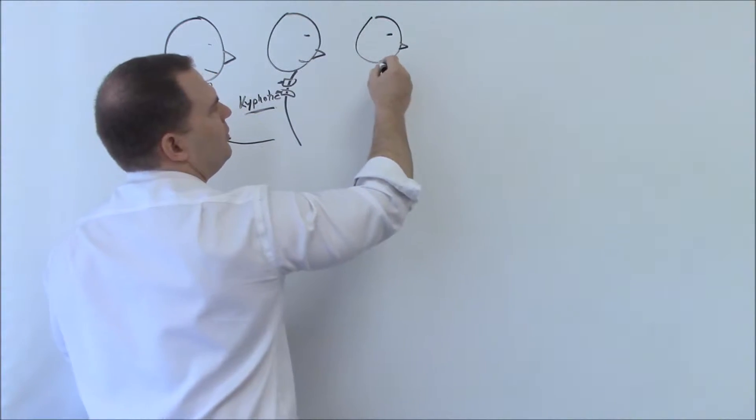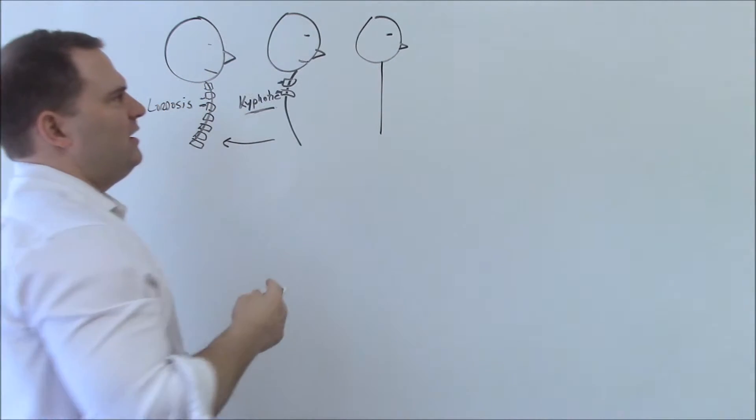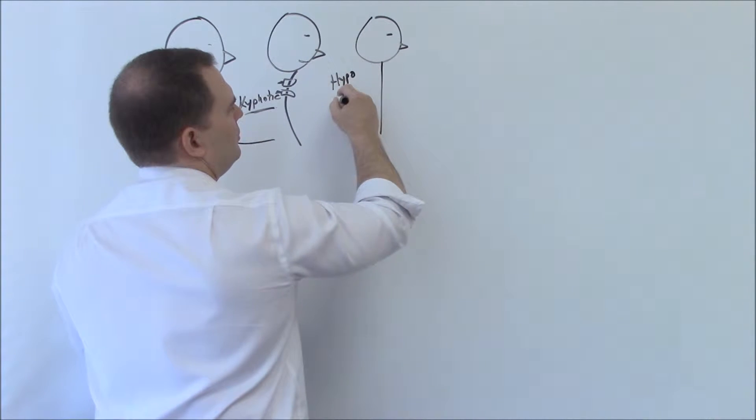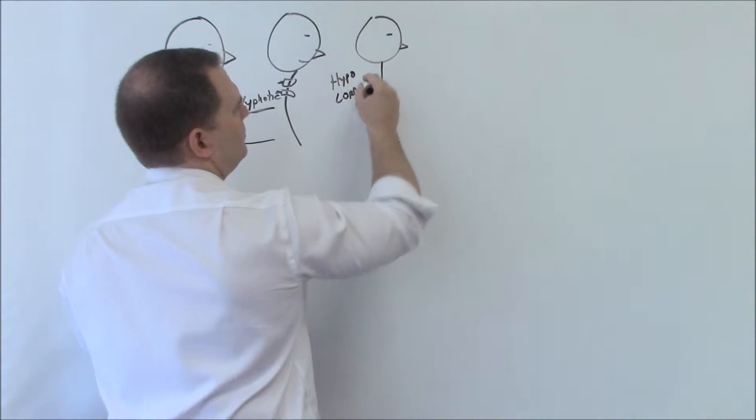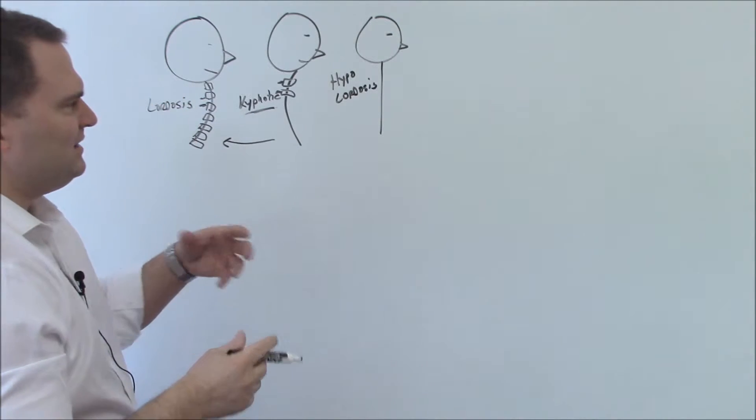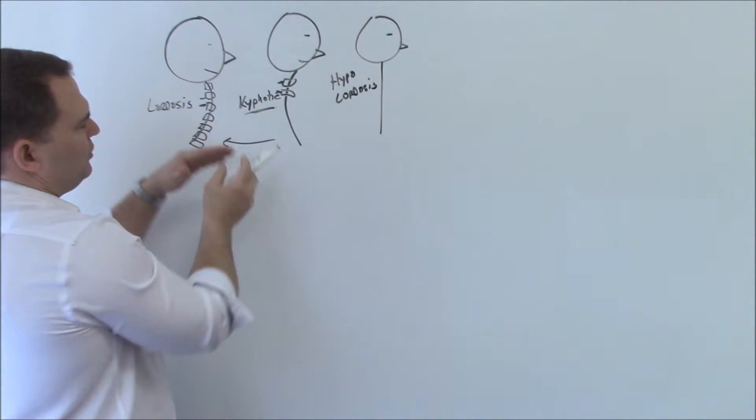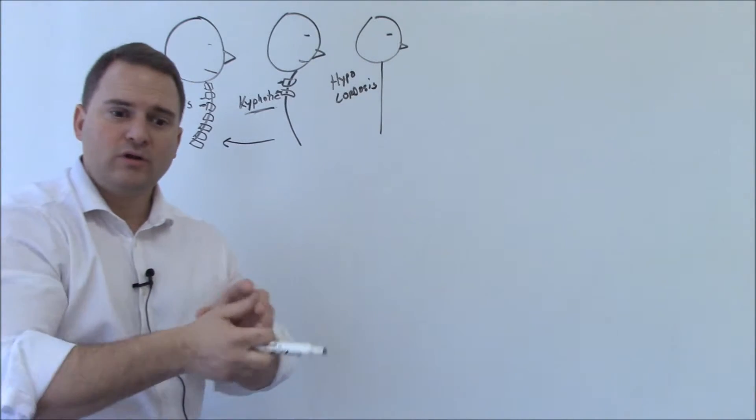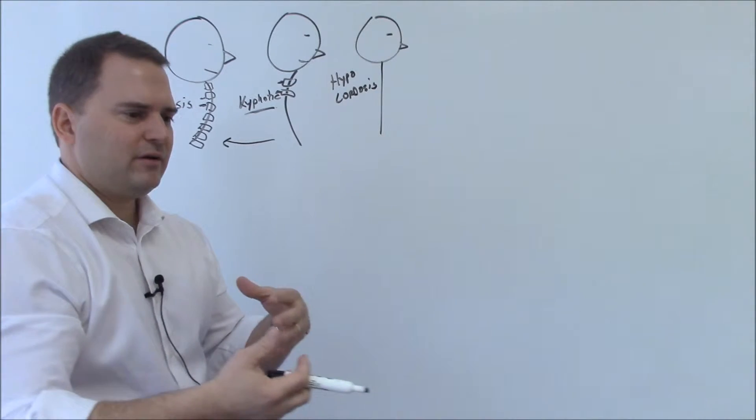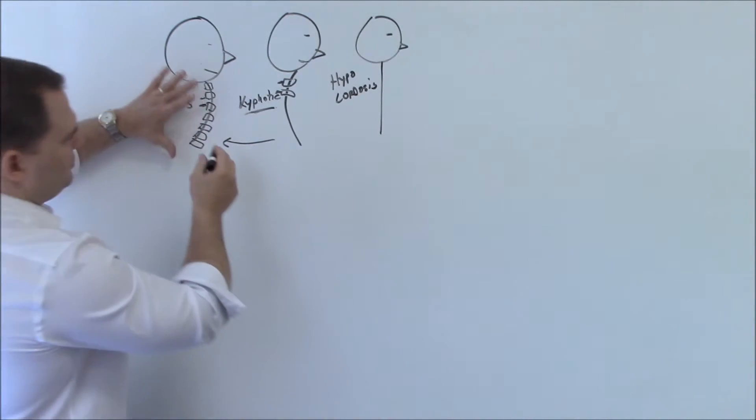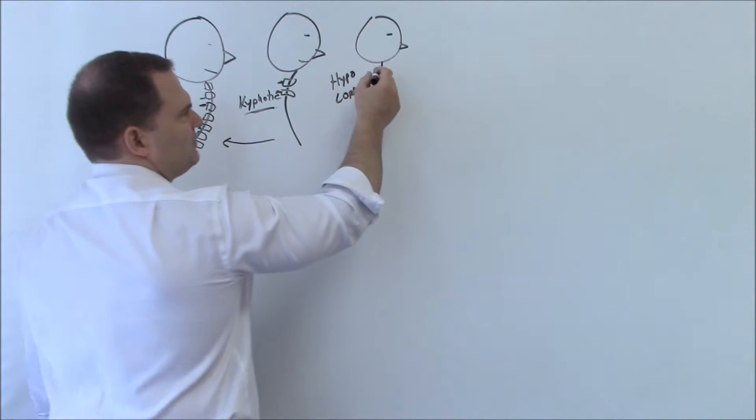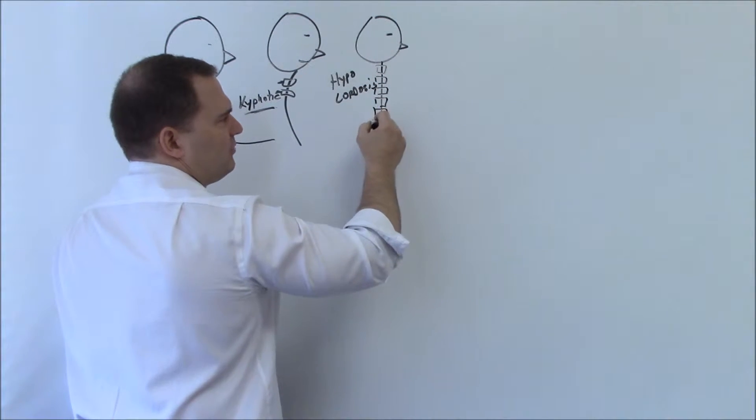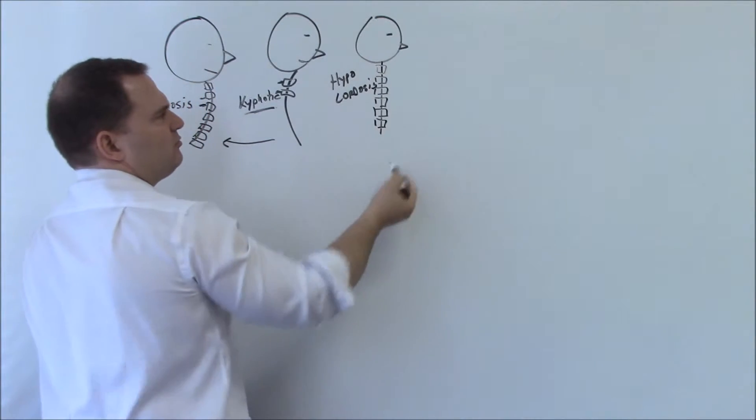Number three, this is called a hypolordosis or a loss of curve. This means that the normal curve, the normal weight-bearing mechanism, the way to dissipate load and the activities of daily living, the fortress that you built here is now gone. You essentially have a stick, so all the stresses are being put directly down straight and not dissipating through the curve.